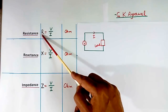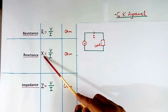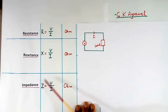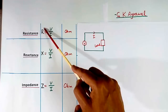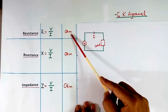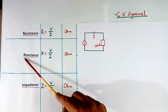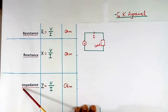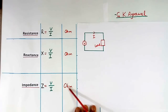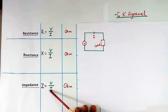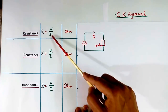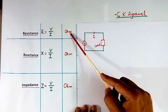Resistance is written as R. Reactance is written as X. Impedance is written as Z. Unit of resistance is Ohm. Unit of reactance is also Ohm. Unit of impedance is also Ohm. So in all three cases, it is V by I, and the unit is Ohm.